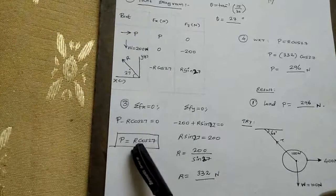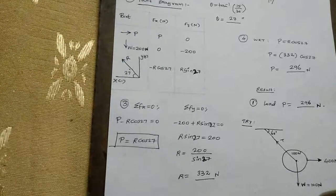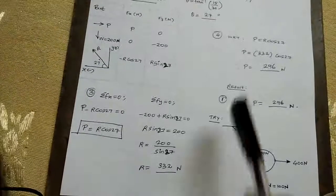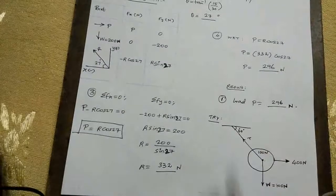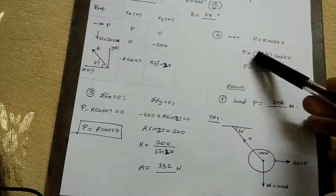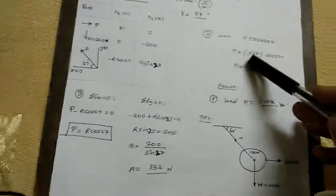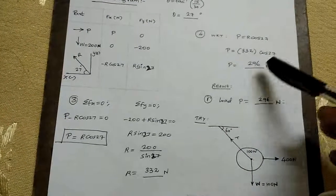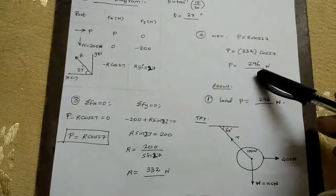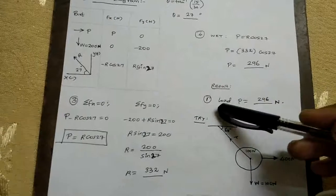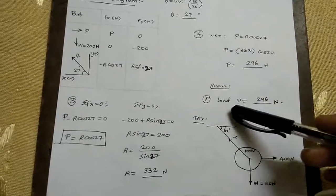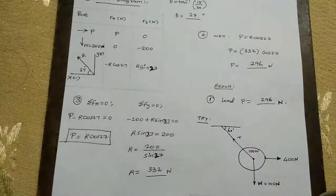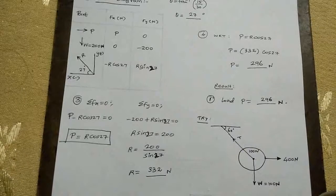Substituting the value of R into the equation for P: capital P equals R cos 27. Substituting the R value directly gives capital P equal to 296 newtons. This is a very simple problem.